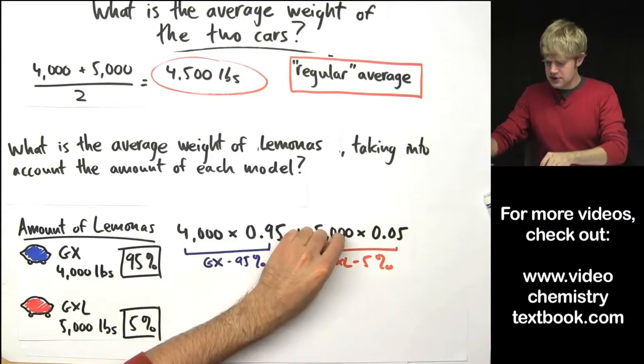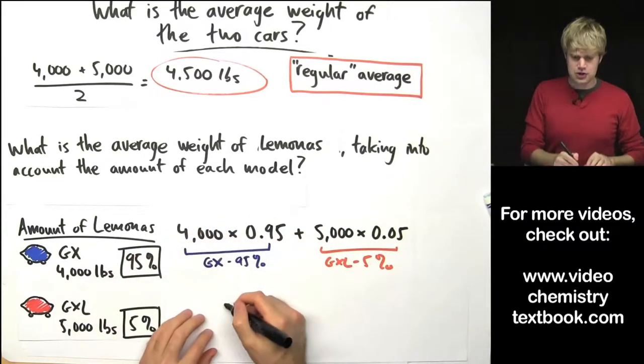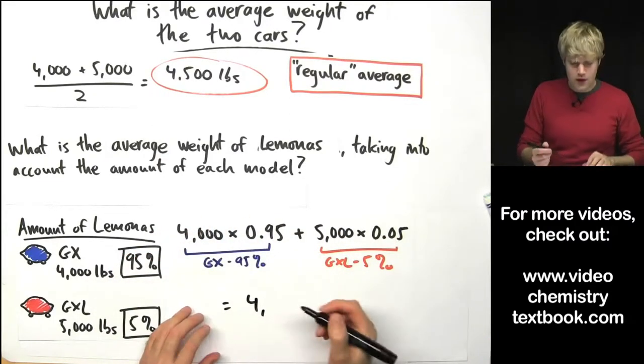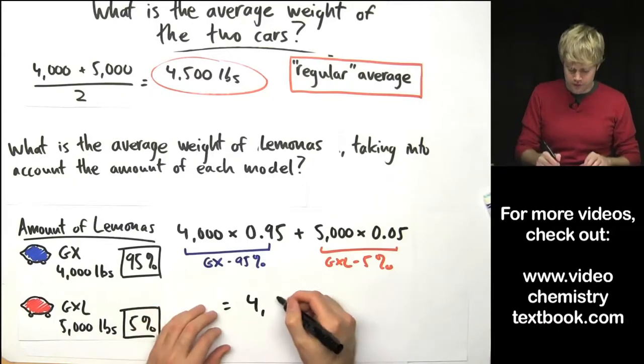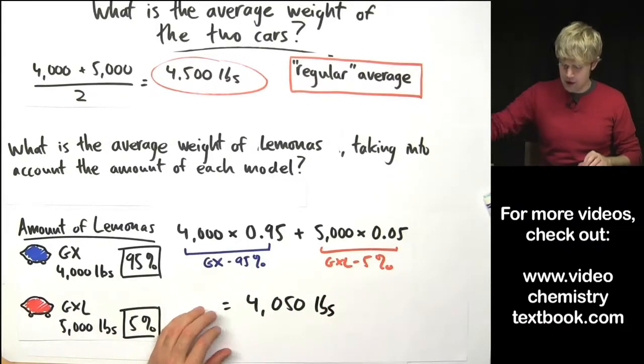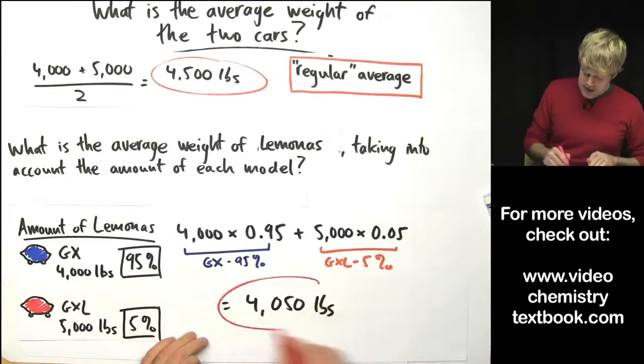I multiply these two things together and then I do the addition and I'm going to end up with a weighted average of 4,050 pounds. Now as you can see...